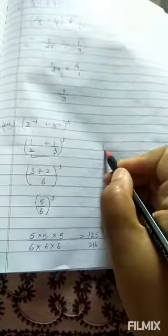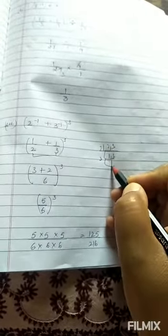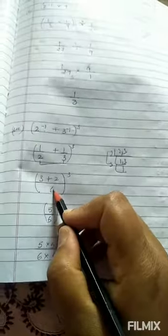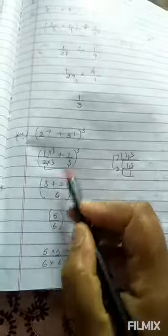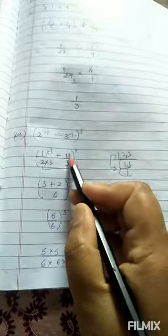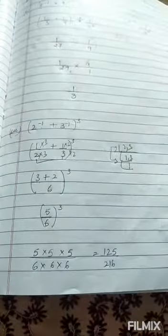Take the LCM of 2 and 3, it will come 6. You know how to take LCM: 2, 3. 2 ones are 2, 3 ones are 3, so 2 threes are 6. Now 2 threes are 6, so 3 ones are 3. 3 twos are 6, so 2 ones are 2. So 5. So 3 plus 2 upon 6, to the power 3.